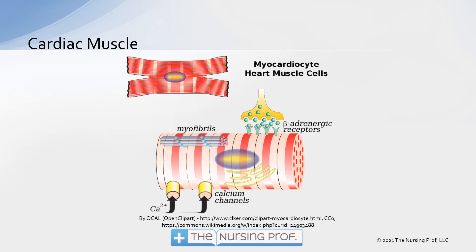If we take the heart muscle here — illustrated at the top — and break it down to one heart muscle cell, that's what we see at the bottom. Notice the important components: the calcium channels and our beta adrenergic receptors, which control how well our cardiac muscle contracts. We need to make sure our patient is getting an adequate amount of calcium and that we're not having too much or too little stimulation of those beta adrenergic receptors.